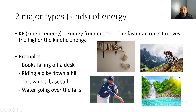A baseball pitcher throwing a baseball — the faster or harder he throws, the more it accelerates and the more kinetic energy it has. And looking at a waterfall, the higher the waterfall the more kinetic energy it's going to have. In all of these examples the objects are moving. To summarize: potential energy means the objects are sitting still, while kinetic energy means the objects are in motion.